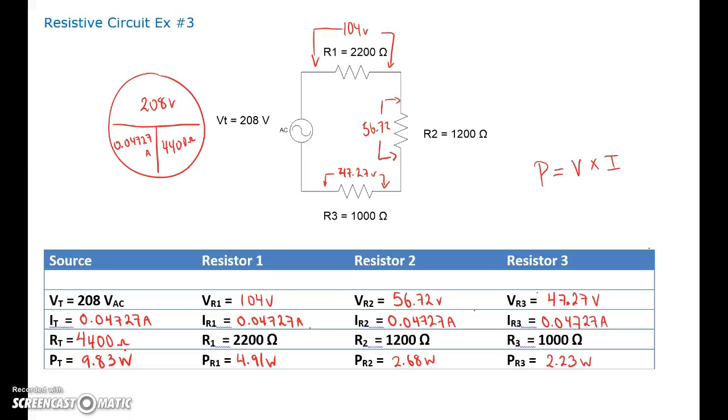Beauty. So what do we got? Let's try 4.91 plus 2.68 plus 2.23, and that gives us 9.82 watts. So close enough, I got 9.83 here. So this guy plus this guy plus this guy is equaling my total power for the circuit. Very nice.